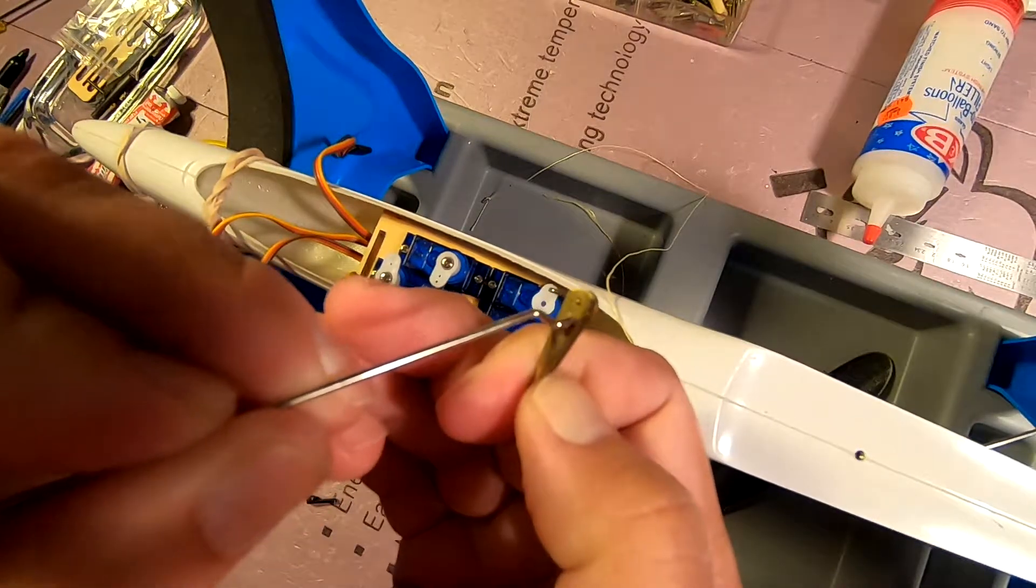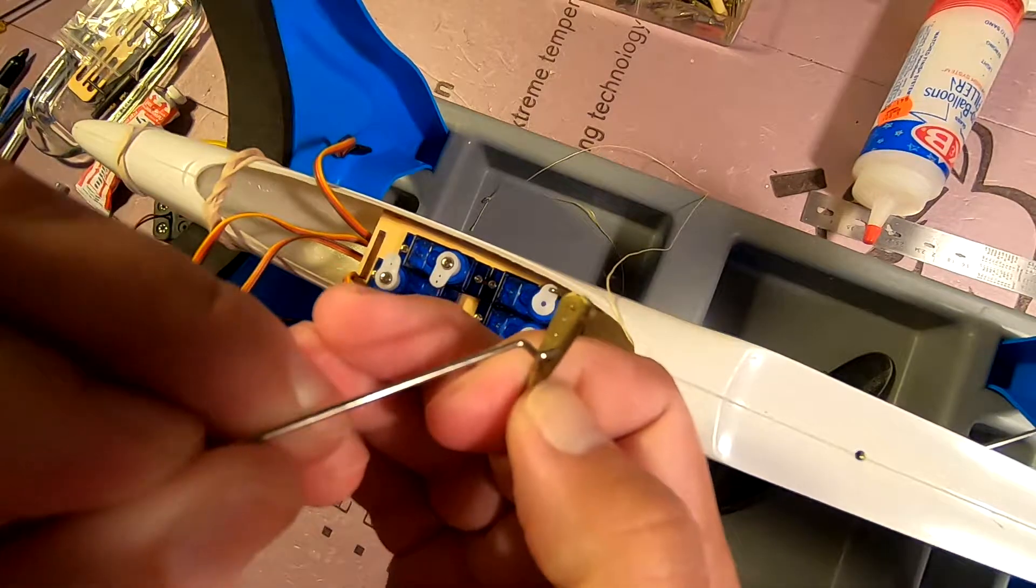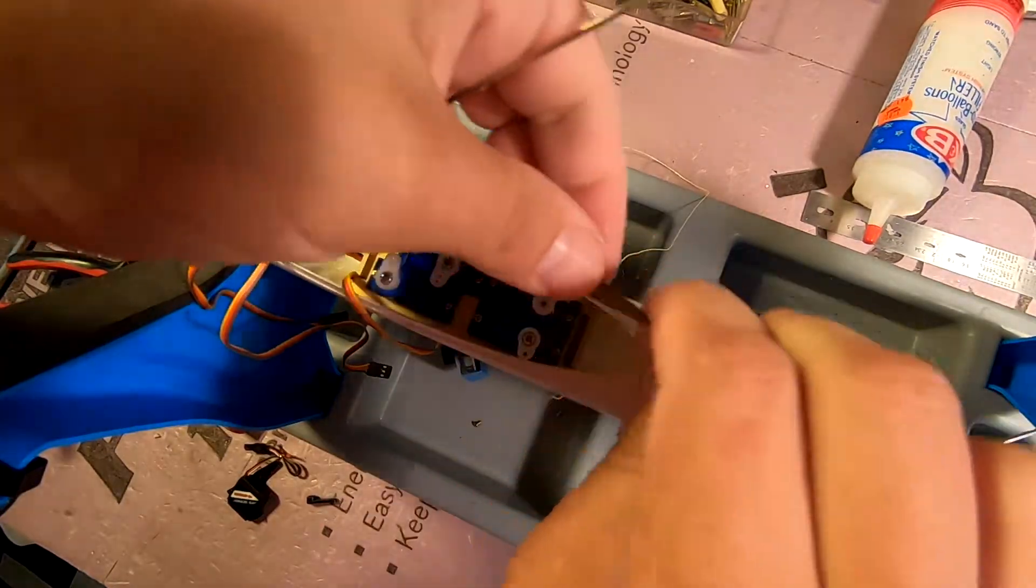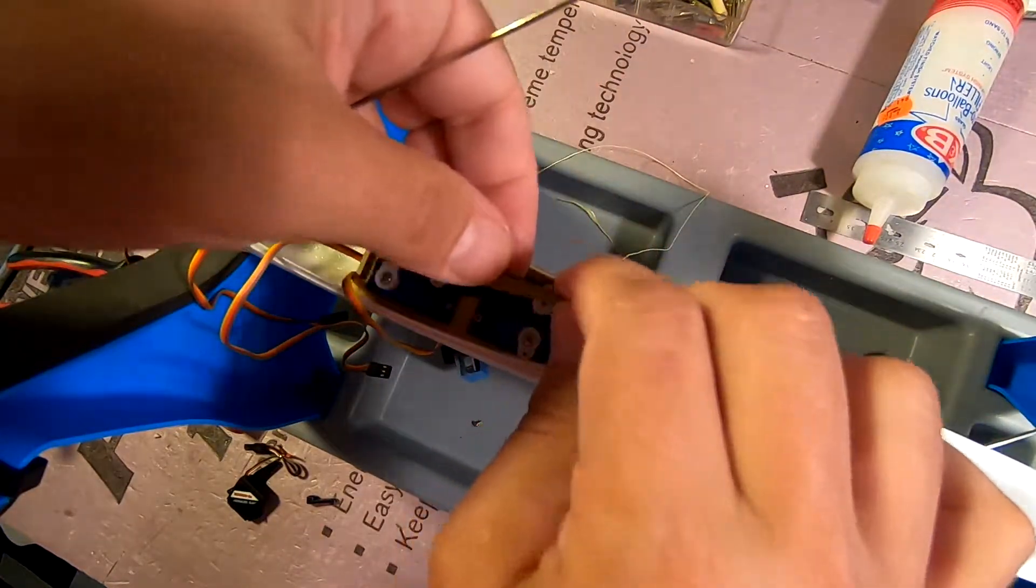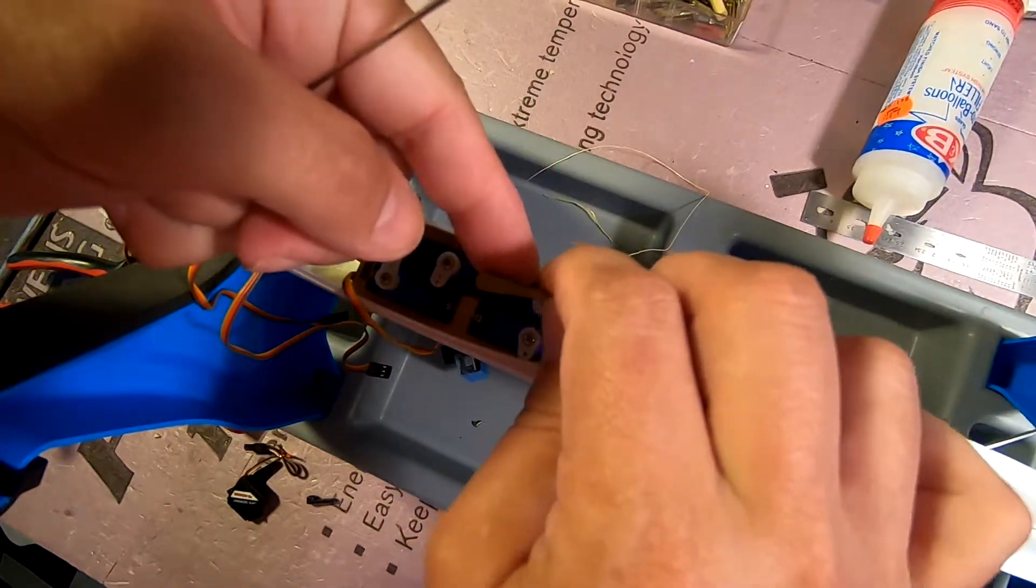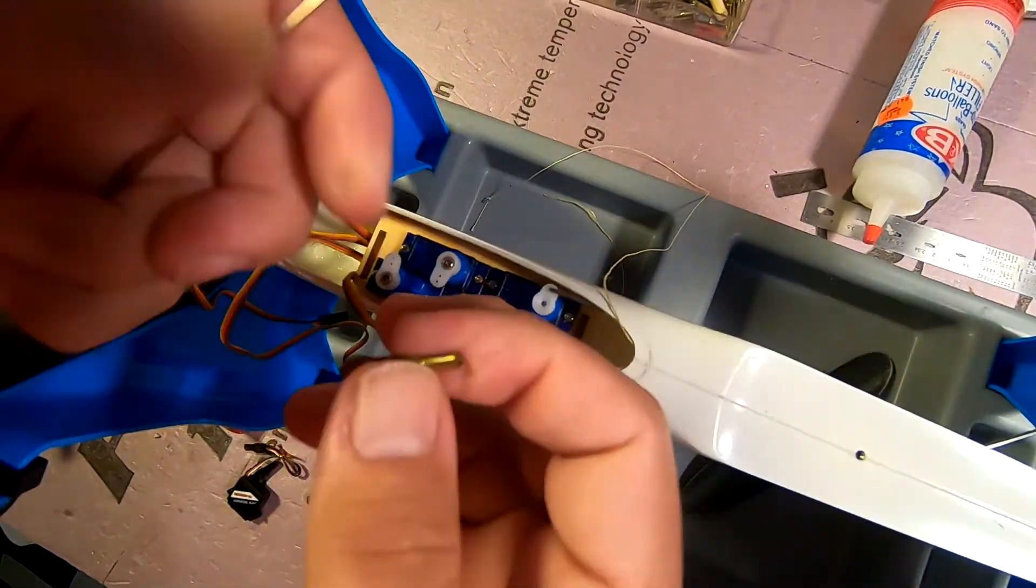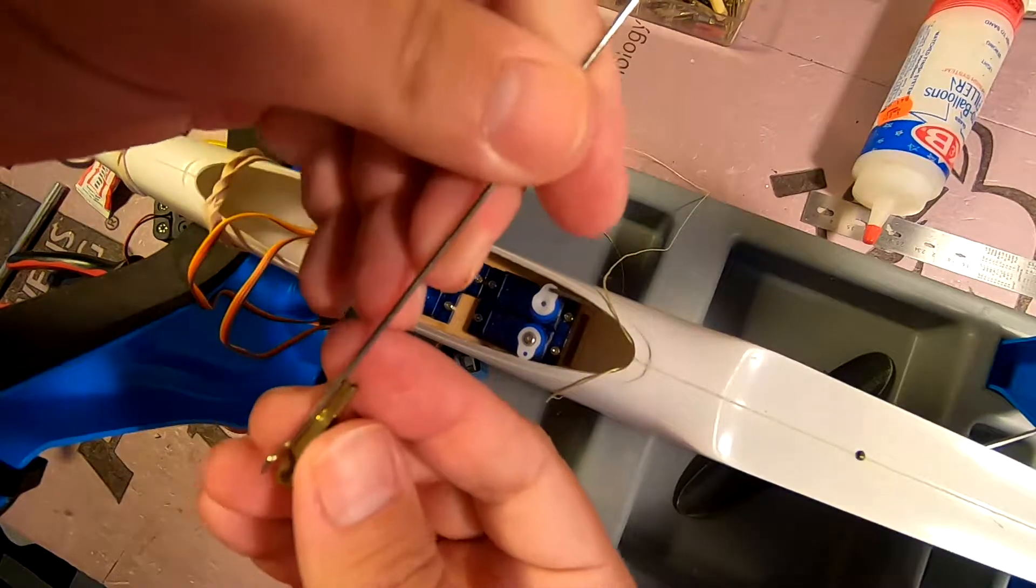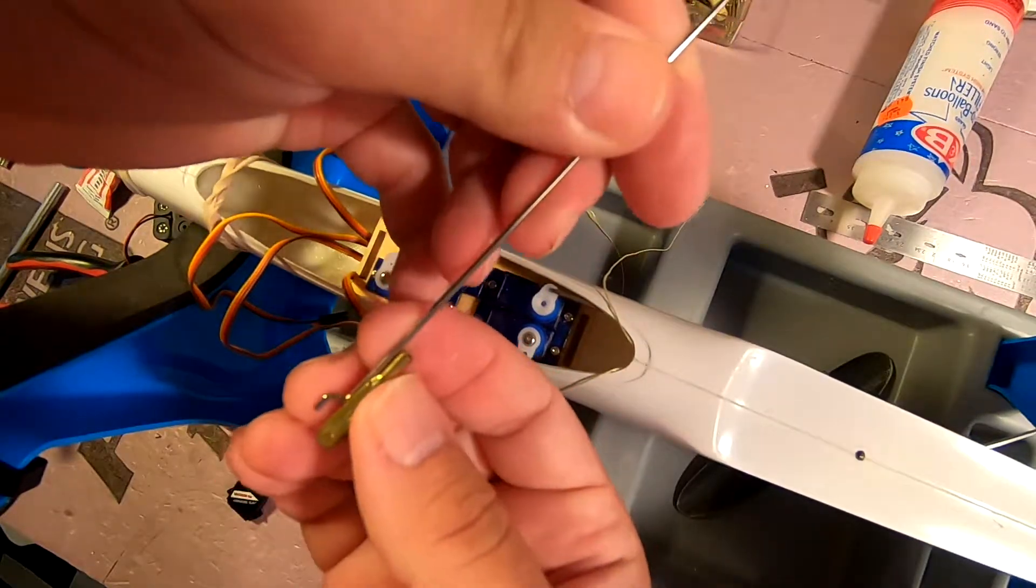That will allow the servo to rotate on the forward stroke where it would be making contact at that point. Trim this rod and glue these clevises in place.